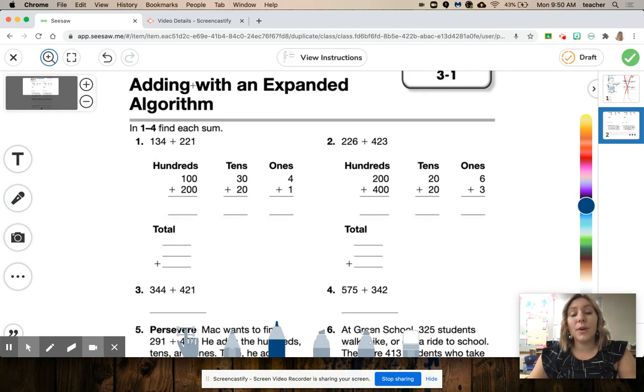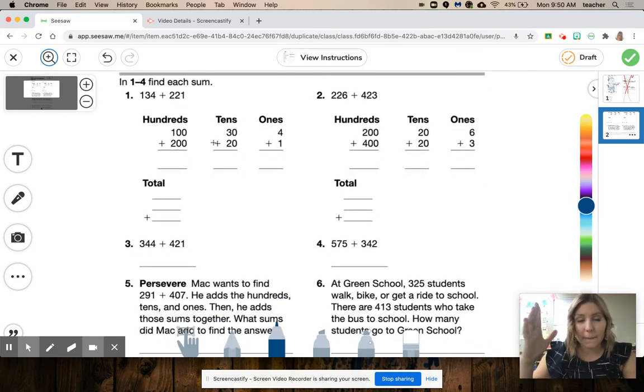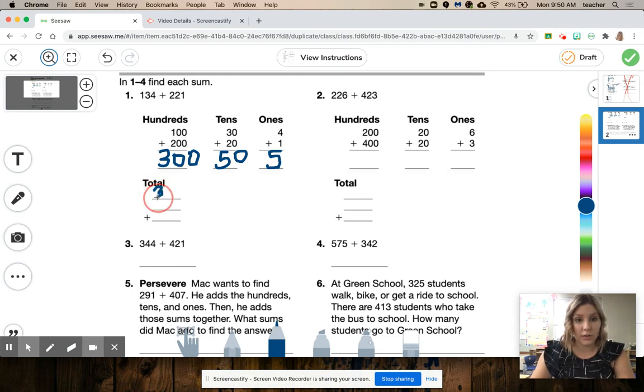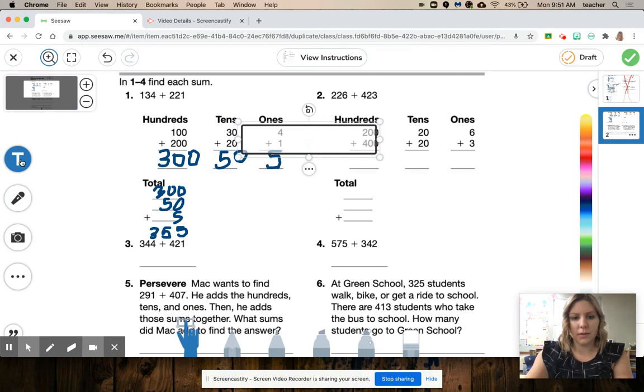Alright. So our lesson today, we're adding with an expanded algorithm. It sounds really hard and really fancy, but it's so easy. We're breaking apart numbers, and we're just adding them. So it adds 134 and 221, and it even breaks it apart for you. We did this one in our morning meeting, remember? So I'm going to start my ones. 4 plus 1 is 5, and if you don't want to use the marker tool, you can totally use the text box. 30 plus 20 is 50, and 100 plus 200 is 300. There we go. And then it gives you these three spaces here. Now, you need to put these values there. So I'm going to put in 300 plus 50 plus 5. And when I get my total value and I add them all up, it will be 355.